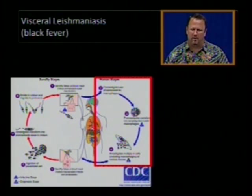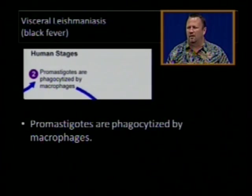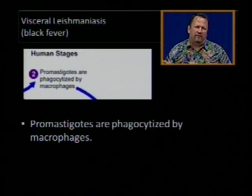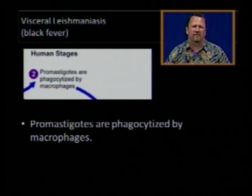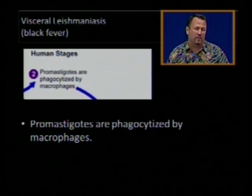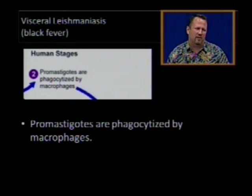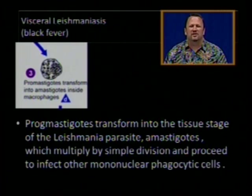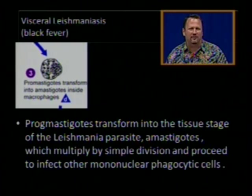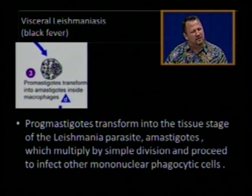After the fly injects the promastigotes into the human, they are phagocytized by the macrophages — macrophages come and eat the injected promastigotes. The promastigotes then transform into the tissue stage of the leishmania parasite, called amastigotes. Promastigotes and amastigotes are two major terms to keep in mind when talking about leishmania.